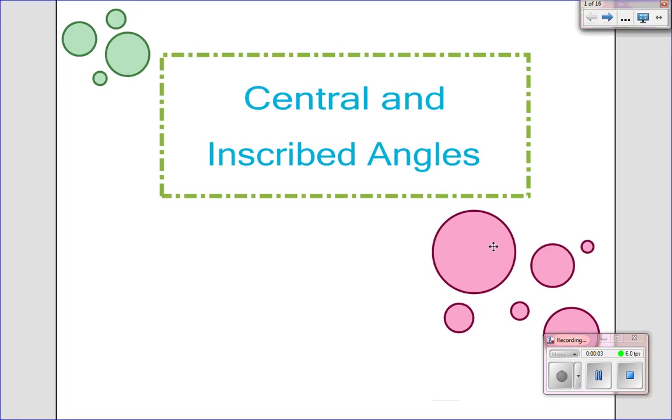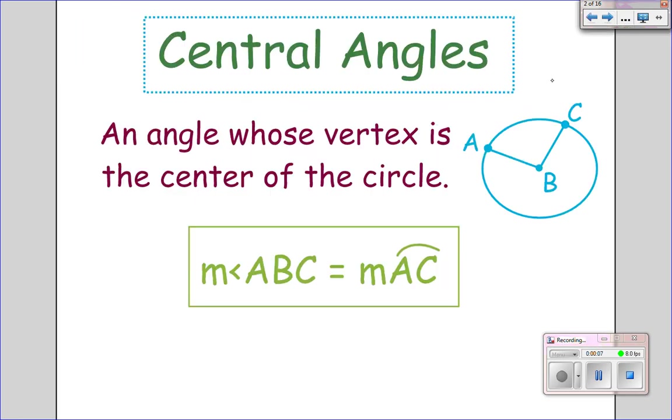Today we'll be looking at central and inscribed angles within a circle. Now yesterday we talked a little about central angles. A central angle is an angle whose vertex is the center of the circle. So this is the central angle because right at the center of the circle.